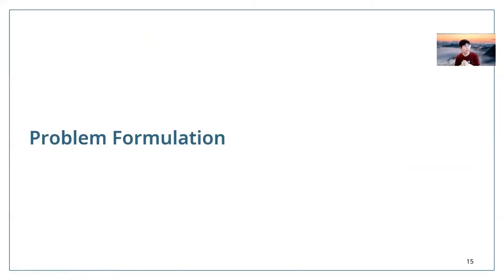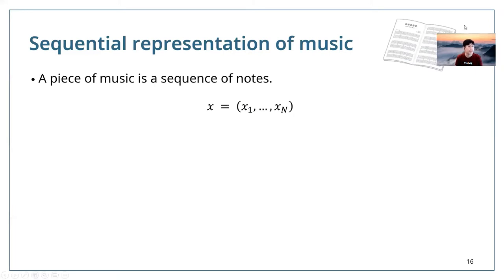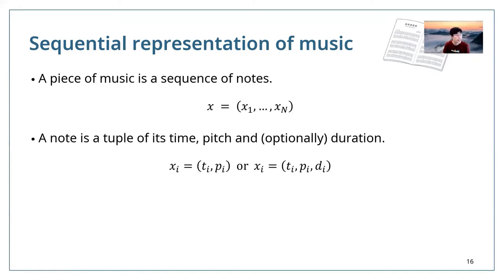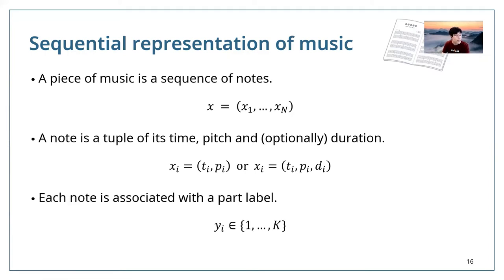For the problem formulation, we represent music as a sequence of notes x1 to xn sorted in temporal and pitch order. A note is defined as a tuple of its time, pitch, and optionally duration — we have different model variants that include or exclude duration. Each note is associated with a part label, and a part can be a voice, an instrument, or a track.